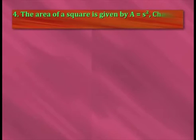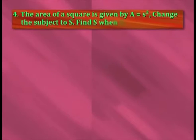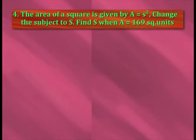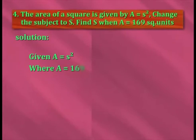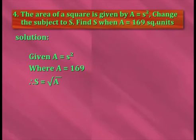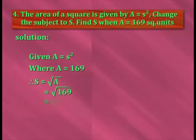The area of a square is given by a is equal to s squared. Change the subject to s and find s when a is equal to 169 square units. Solution: given a is equal to s squared, where a is 169, therefore s is equal to square root of a, which is equal to square root of 169, which is 13 centimeters.